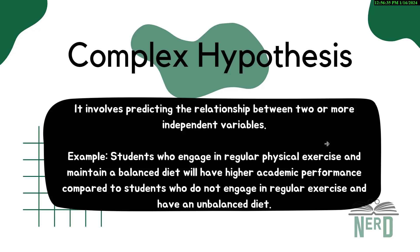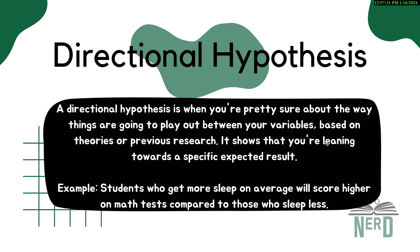The complex hypothesis is like guessing how more than two friends will get along — it involves more than two independent variables and one dependent variable. It's a bit more complicated because there are more relationships to consider. For example: a student who engages in regular physical exercise and maintains a balanced diet will have higher academic performance compared to students who do not engage in regular exercise and have an unbalanced diet. Here you're comparing two independent variables to see what happens to the dependent variable — academic performance.